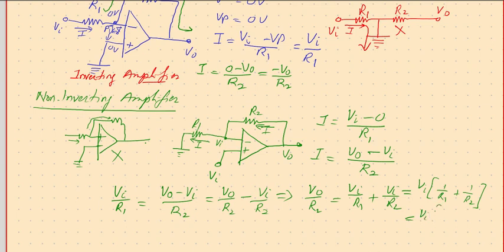V0 minus VI by R2, so if you take VI by R1 plus 1 by R2 and that is equal to VI times R1 plus R2 by R1 times R2. And if you remember the left hand side is having 1 over R2, therefore that 1 over R2 can cancel out with this R2.